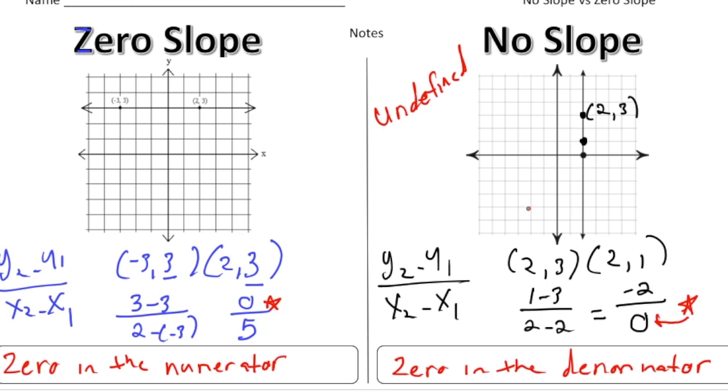So now that you have a good understanding about zero slope and no slope, when you pause the video. And try the your turn problems now. And when you're done, hit play. You can see how you did. Good luck.